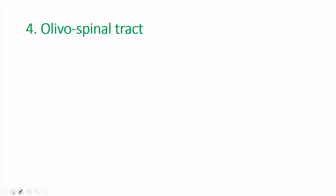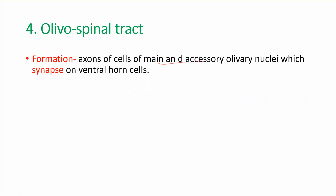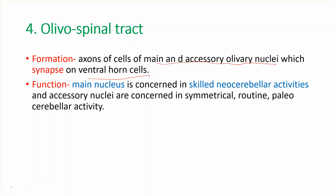The olivospinal tract is formed by the main and accessory olivary nuclei, which synapse on the ventral horn cells. The function of the main nucleus is related to skilled neocerebellar activity — related to the new cerebellum — receiving input from the cerebrum. The accessory nuclei are concerned with symmetrical routine paleocerebellar activity.